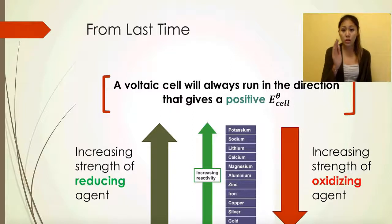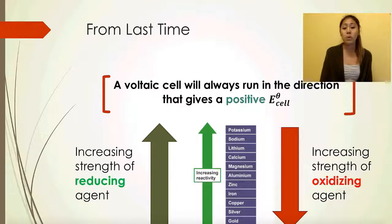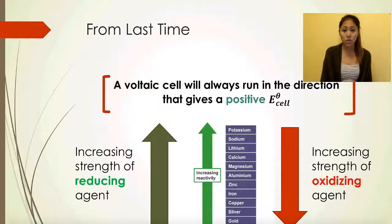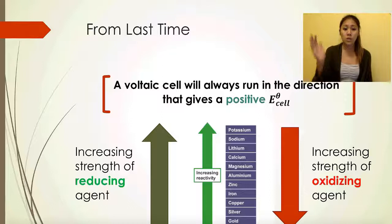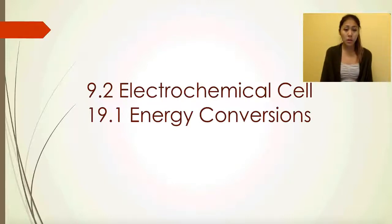So it's more easily oxidized as we go up the reactivity series, and it increases the strength of oxidizing agents as you go down — so more easily reduced going down. Today we're going to look at sections 9.2 and 19.1 again, but this time focusing on electrolytic cells rather than voltaic, and we'll do a few comparisons.